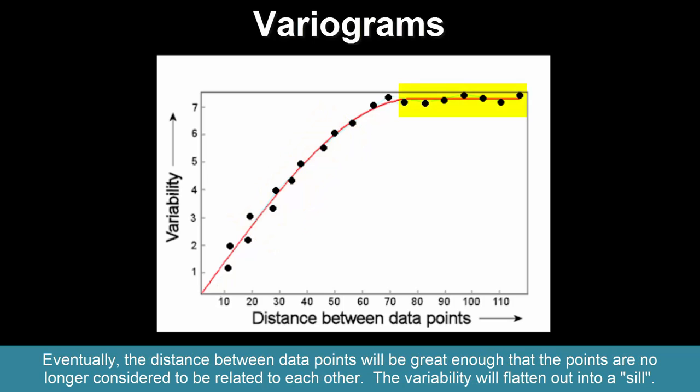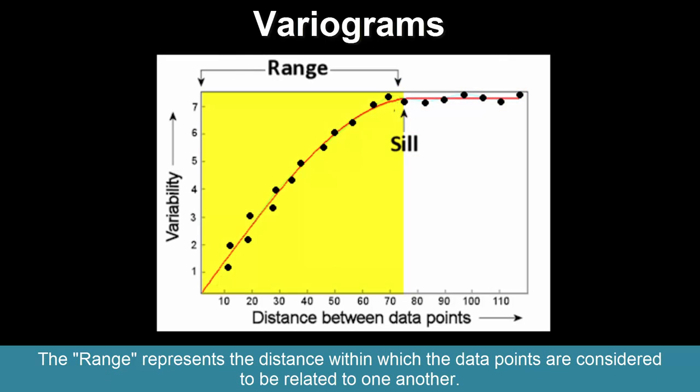Eventually, the distance between data points will be great enough that the points are no longer considered to be related to each other. The variability will flatten out into a sill. The range represents the distance within which the data points are considered to be related to one another.